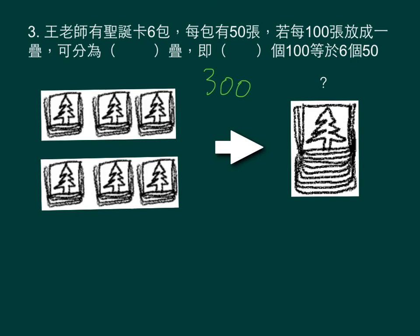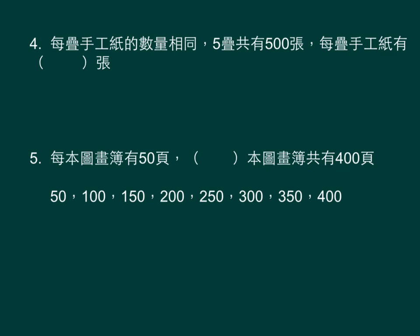五十、一百、一百五十、二百、二百五十、三百。如果每一百张放成一搭，三个一百就可以分成三搭。五搭共有五百张。每一百个一数：一百、二百、三百、四百、五百，所以共有五百张。